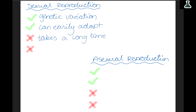For example, in humans pregnancy lasts 9 months and then you also need to find a mate. This is a big problem in endangered species because if there are only a few animals left, it can be hard for them to find each other to mate.